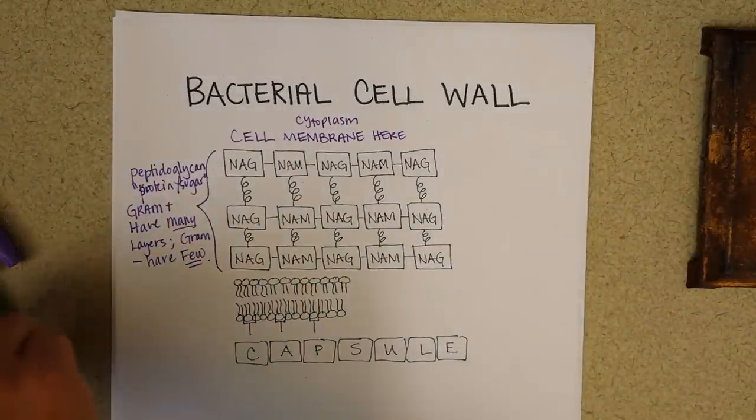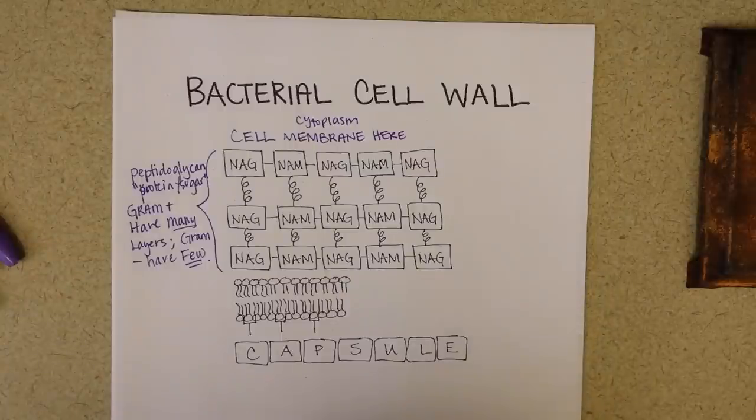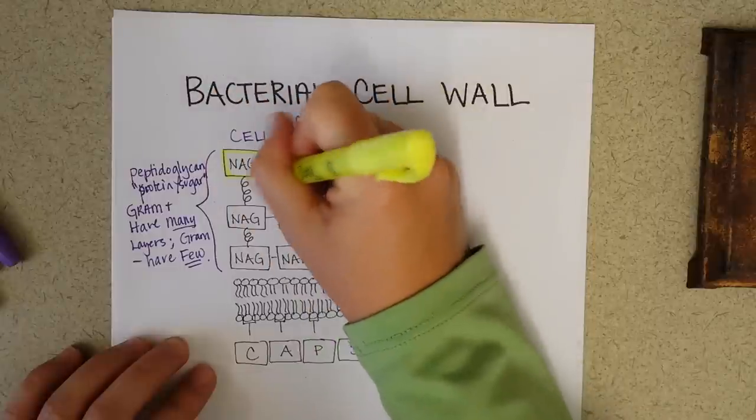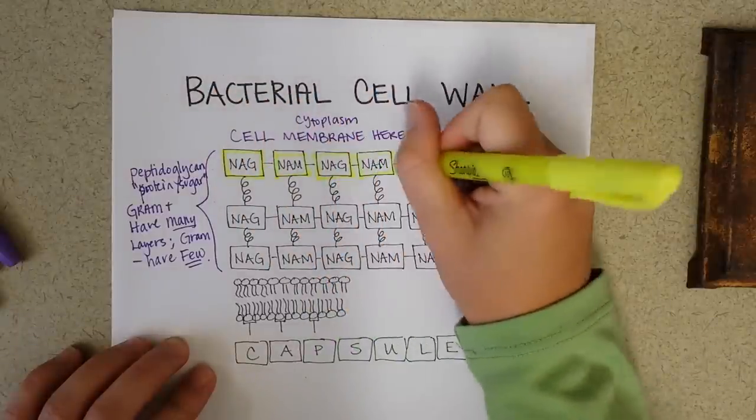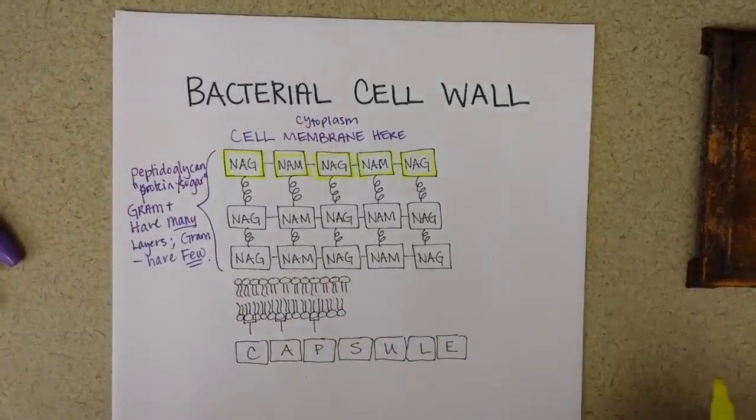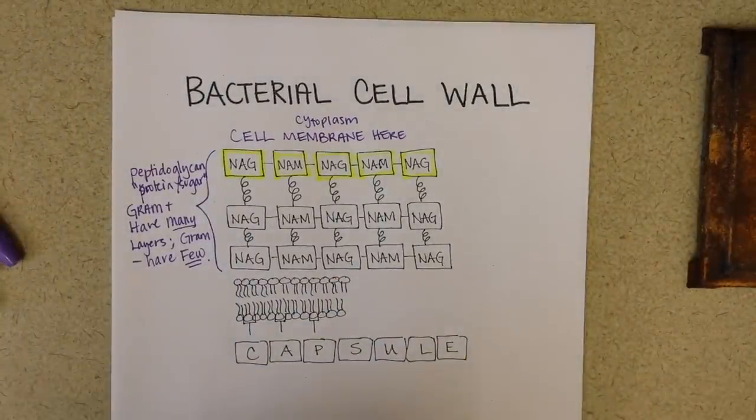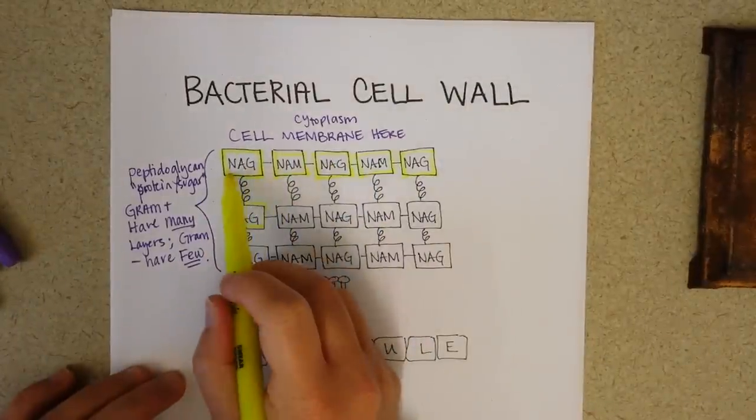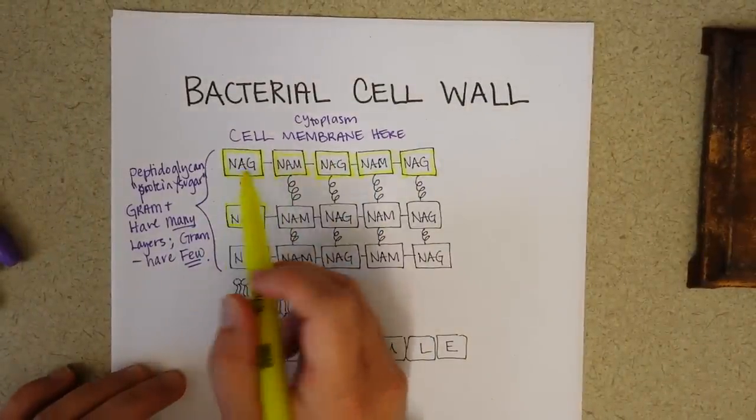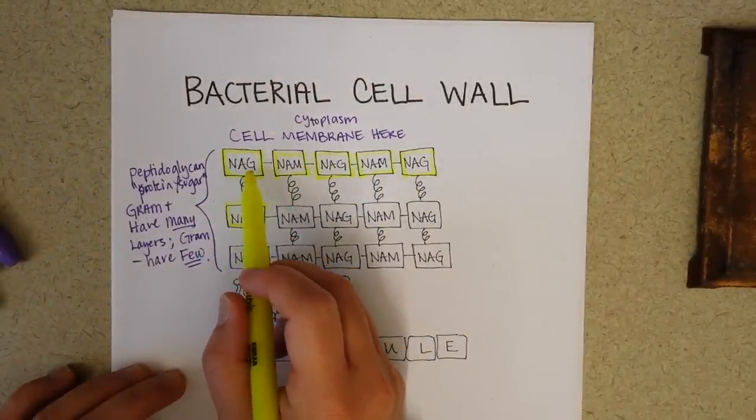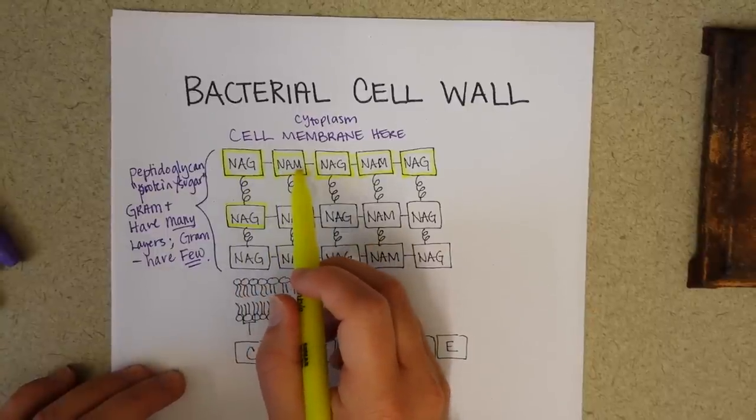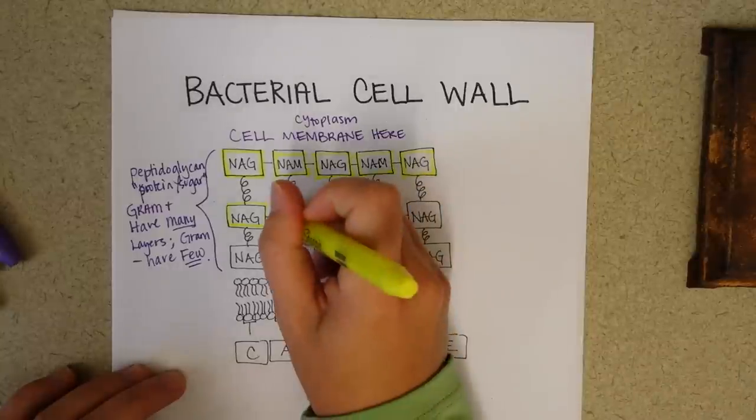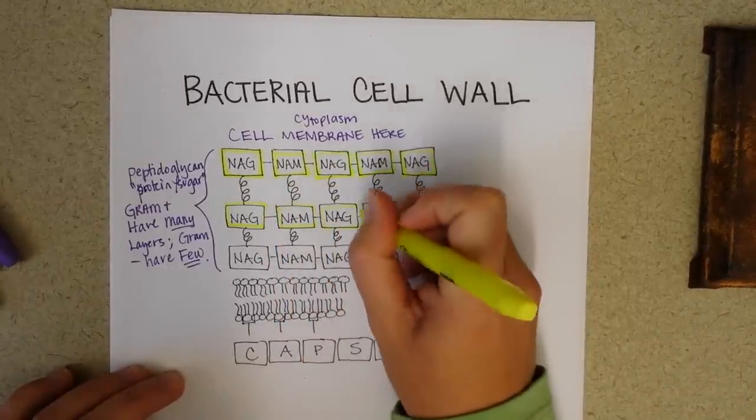Okay, so first let's take a look at these NAGs and NAMs. Go ahead and use a yellow highlighter on the NAGs and the NAMs. And I'll tell you what that stands for in just a second. Okay, so what these are, are sugars in the cell wall. And the N stands for nitrogen. So N-acetylglucosamine and N-acetylmuramic acid. So these are actually sugars and they're linked together.